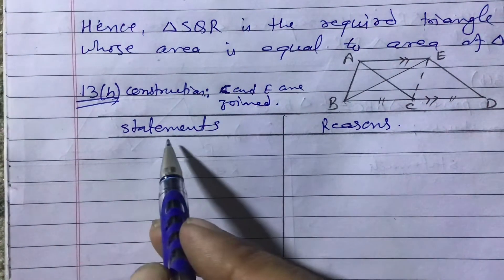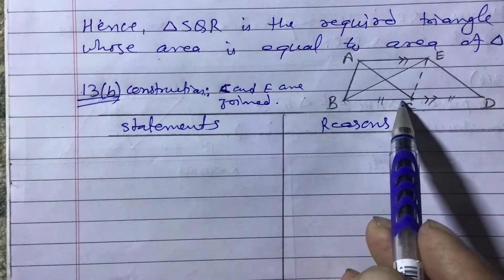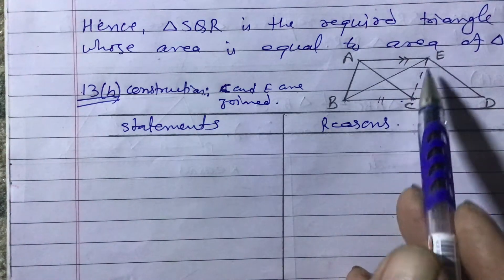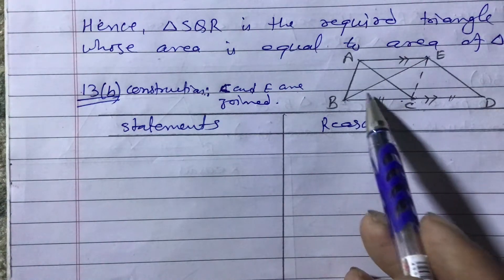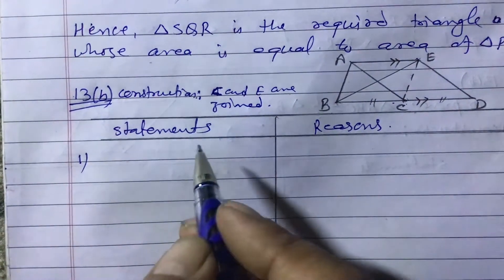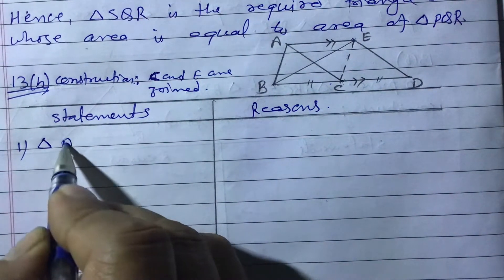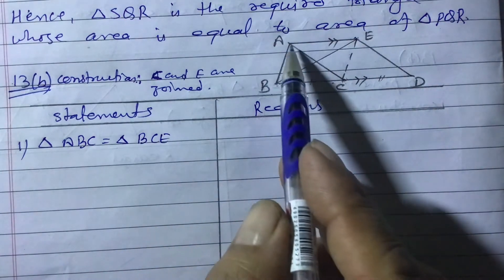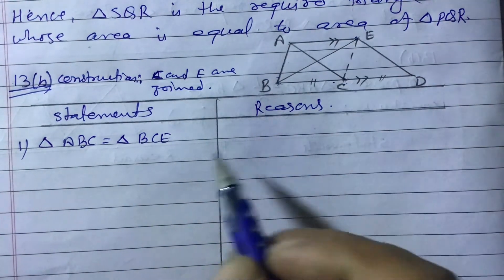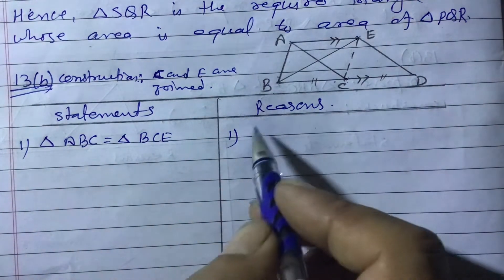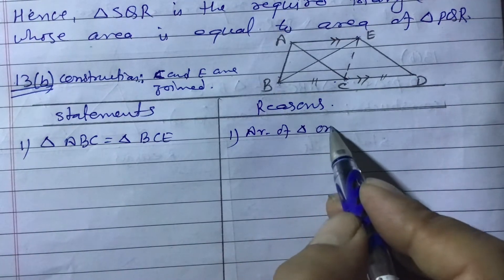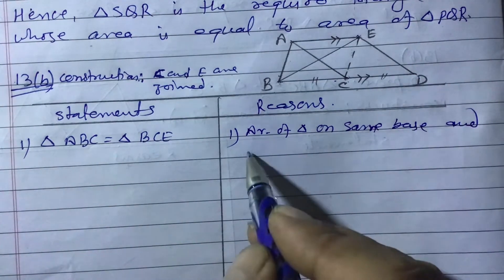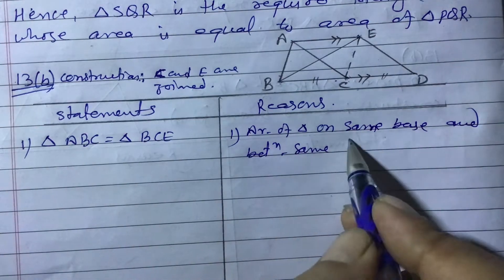Statement one: Triangle ABC equals triangle BCE. Look at triangles ABC and BCE — they are standing on the same base BC and between the same parallel lines AE and BD. So these two triangles are equal. Reason: Triangles on the same base and between the same parallel lines are equal in area.